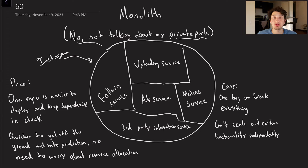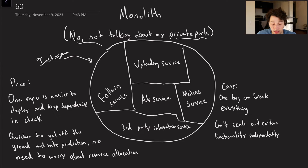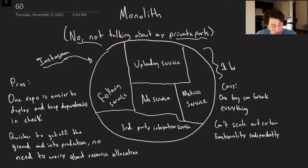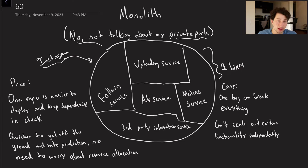As a result of having just one piece of code that's going to run everything, it basically means that you're going to deploy it together, scale it together, et cetera. So if we were to use Instagram as an example, we might have literally just one binary. Within that we would have the ability to upload files, follow other users, serve people ads, connect to third parties, and deal with metrics. Of course there are going to be some pros and cons when designing an application this way.